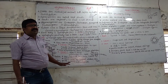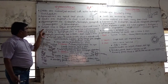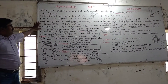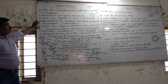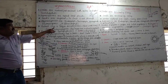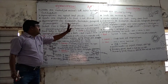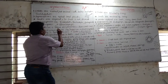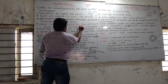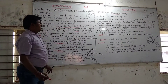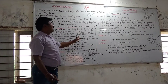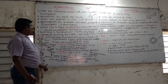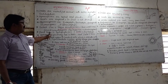In gymnosperms, the tallest tree is found — that is Sequoia sempervirens, the redwood tree. The tallest tree is Sequoia sempervirens, which is also known as the rosewood tree, found in gymnosperms.